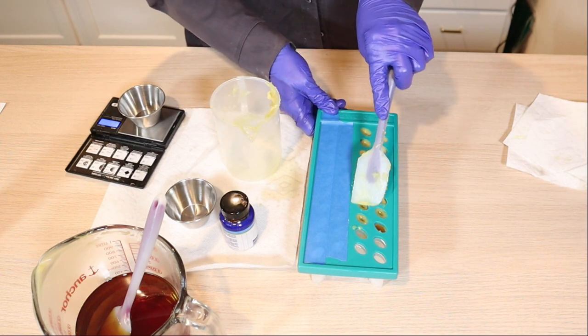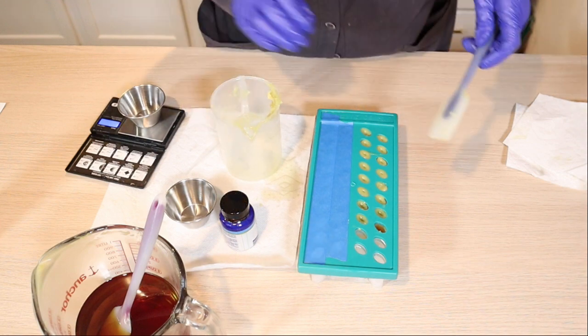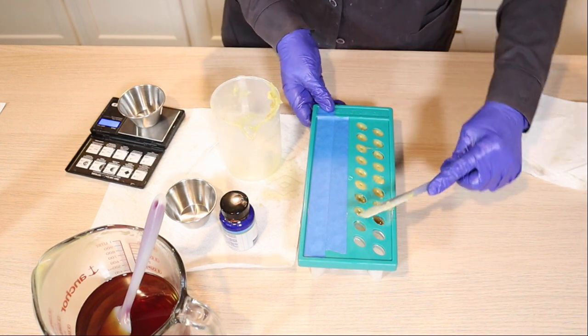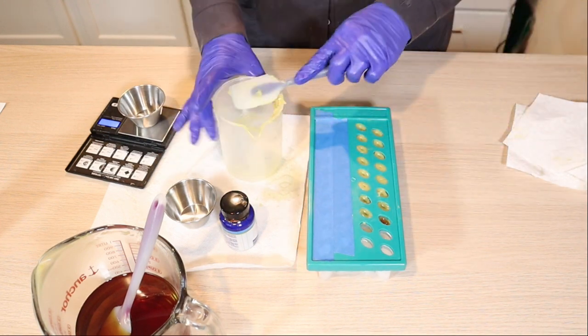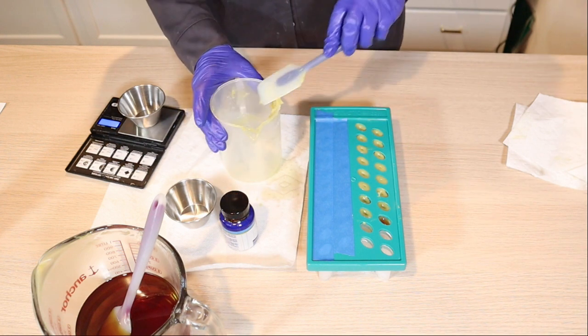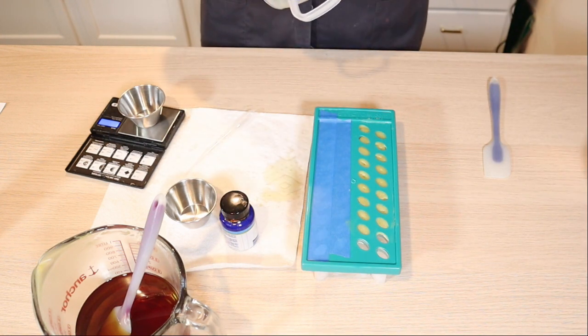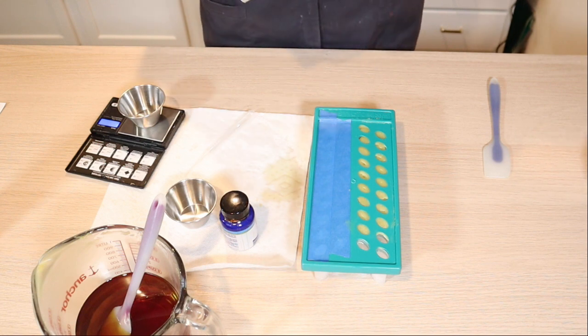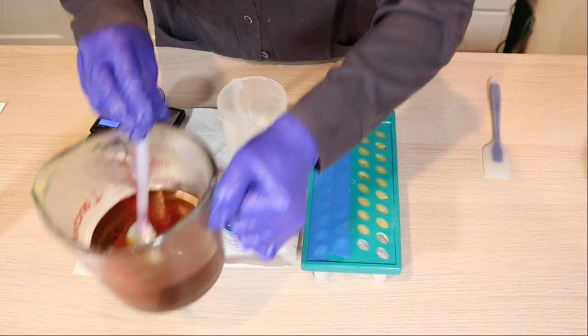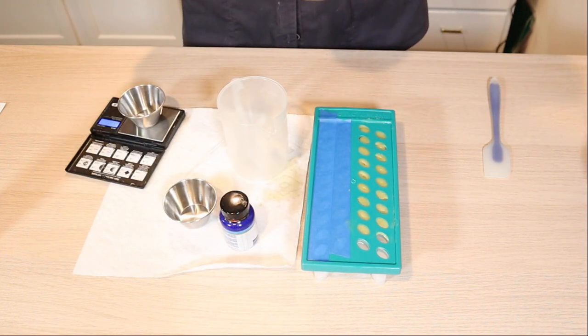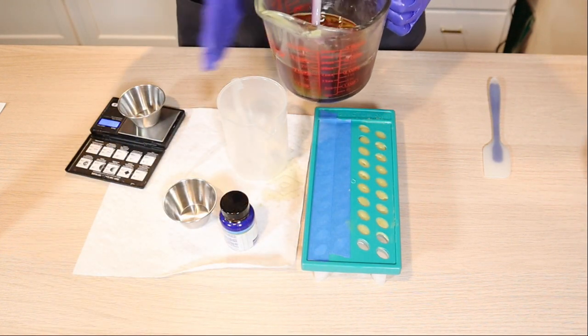What I'm going to do now is just kind of scrape this off the top and maybe fill that last one up, then refill some of these that have the sinkholes. Now I made a mess. I'm going to wipe this out really well and get another three ounces.